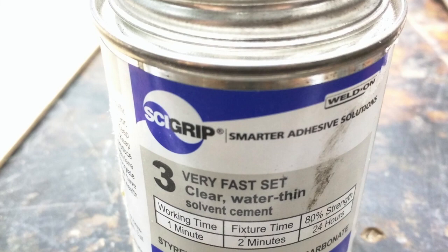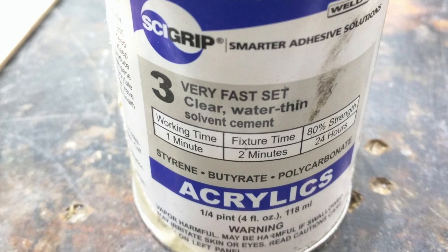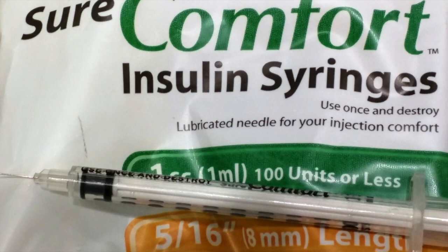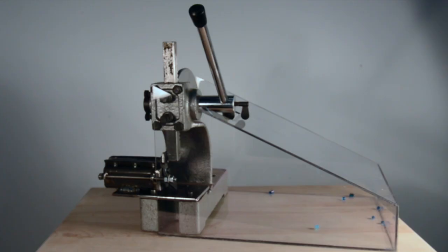Next, I fixed the Lexan together with this weld-on glue. It's a very thin liquid. I draw the liquid up in either a small drip container or a small insulin syringe. Put a very small amount in the cracks and then hold it together for about 10 minutes. And it will be fairly tight. It takes about 24 hours to fully reach its strength.